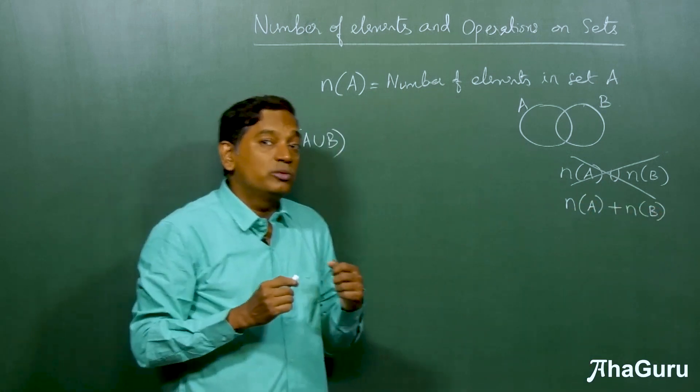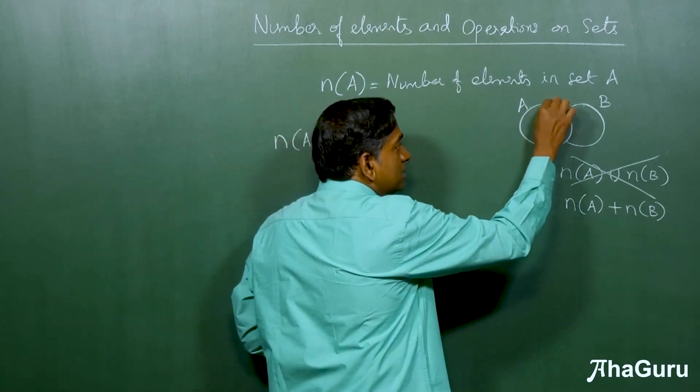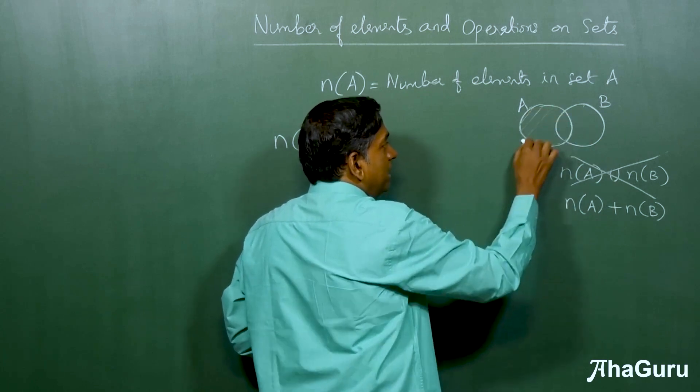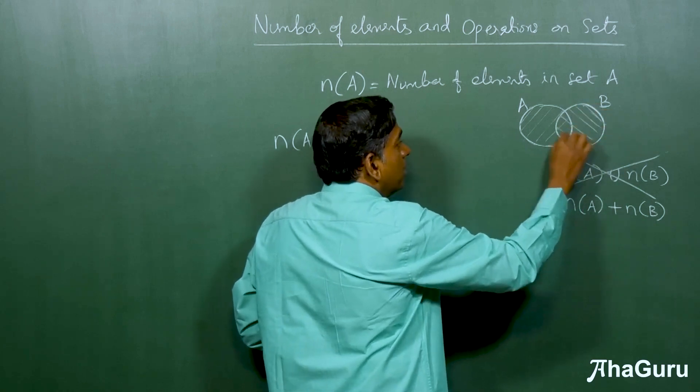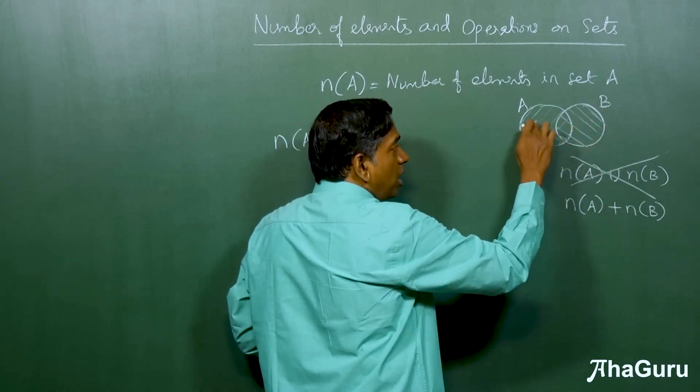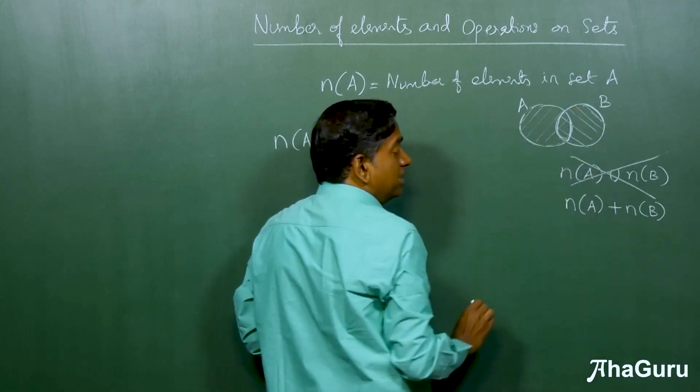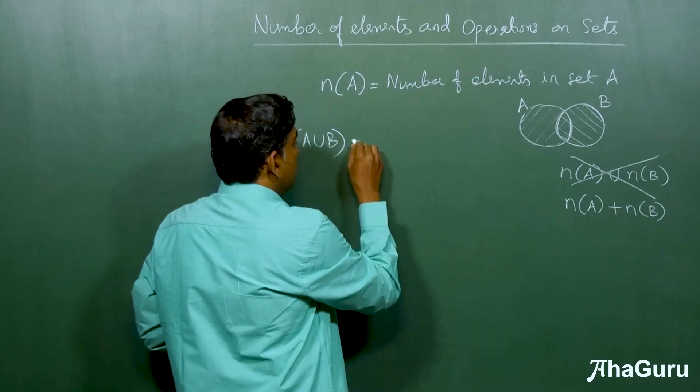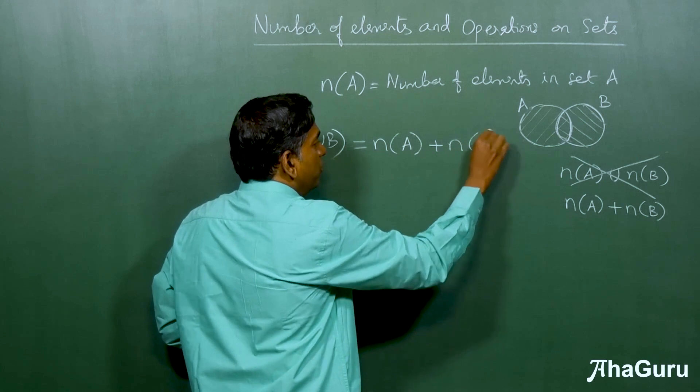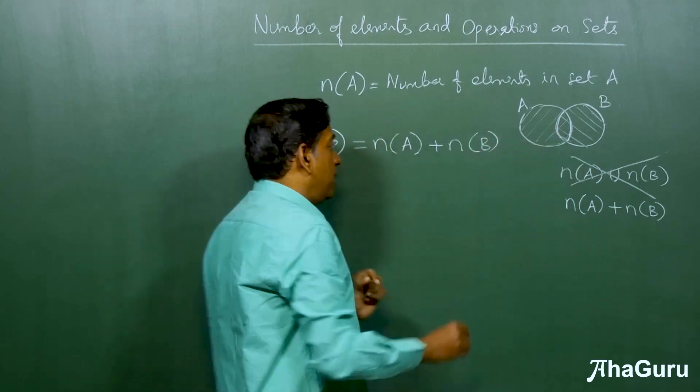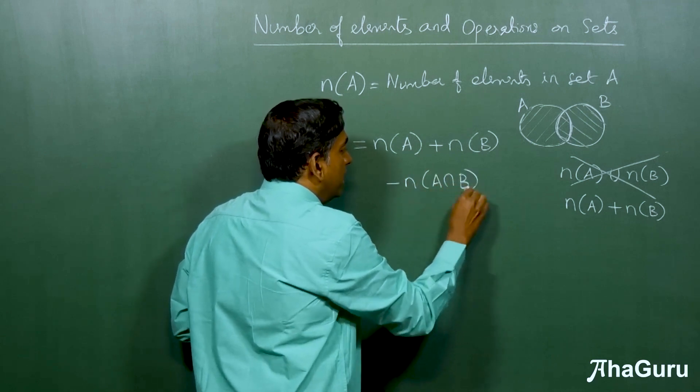But this also turns out to be wrong because n(A) is the number of elements in all of set A, which includes this entire region. n(B) is all the elements in set B. But when you count this plus this, you are double counting the common region. Therefore, the correct answer for n(A union B) is n(A) plus n(B) minus the common part, which is minus n(A intersection B).